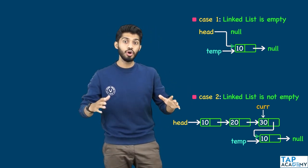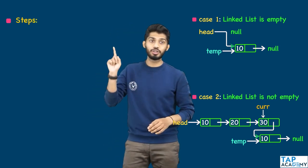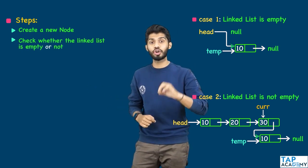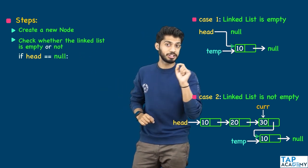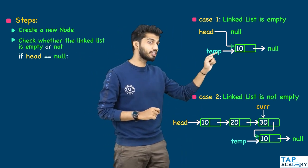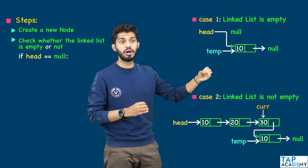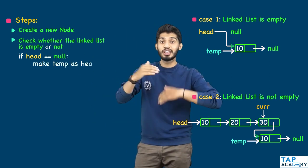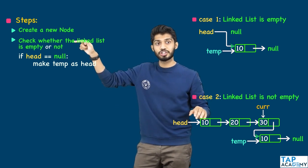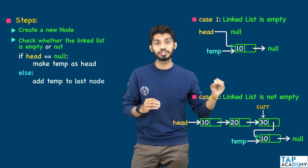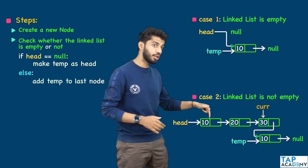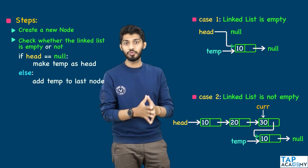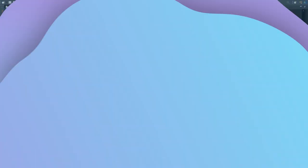Let's summarize the steps. First, create a new node. Second, check whether the linked list is empty or not by checking if head equals null. If it is empty, set head equal to temp. If it is not empty, the condition will be false, and we need to add temp to the last node. We traverse using the same for-loop we've seen before to reach the last node and then write the code.